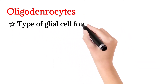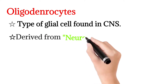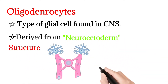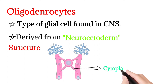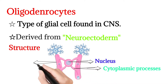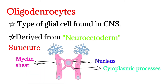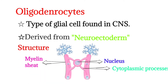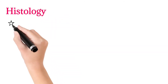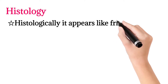Oligodendrocytes are a type of glial cell found in the central nervous system. They are derived from the neuroectoderm. Their structure includes cytoplasmic processes, a centrally present nucleus, and a myelin sheath. Histologically, oligodendrocytes appear like a fried egg, as shown in the figure.